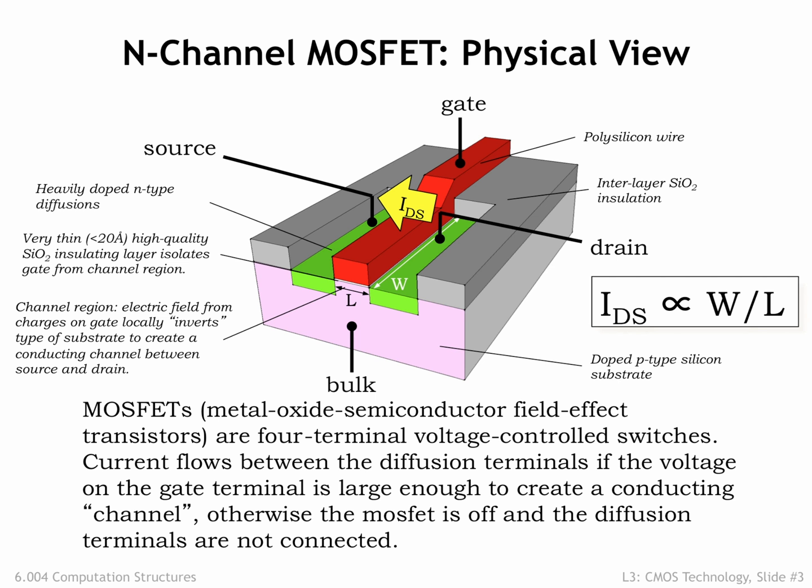Designers choose the channel width to set the desired amount of current flow. If IDS is large, voltage transitions on the source and drain nodes will be quick, at the cost of a physically larger device. To summarize, the MOSFET has four electrical terminals: bulk, gate, source, and drain. Two of the device dimensions are under the control of the designer — the channel length, usually chosen to be as small as possible, and the channel width, chosen to set the current flow to the desired value. It's a solid-state switch with no moving parts, and the switch operation is controlled by electrical fields determined by the relative voltages of the four terminals.